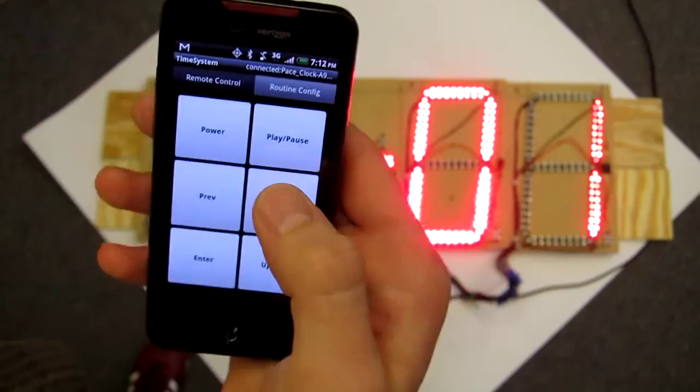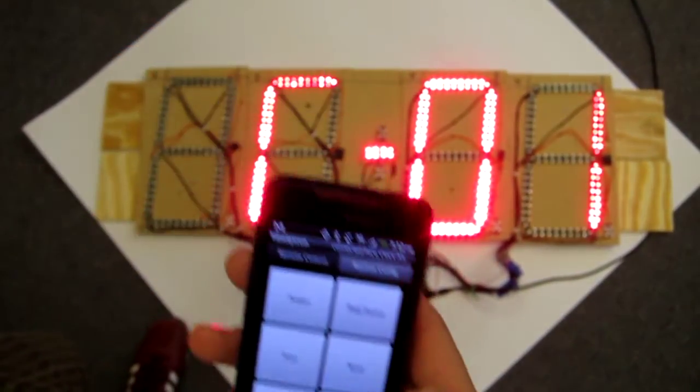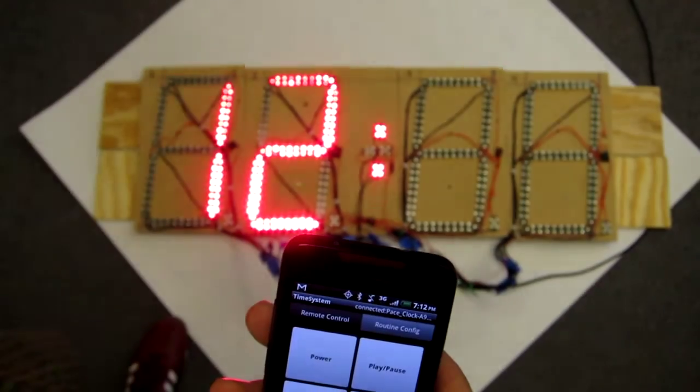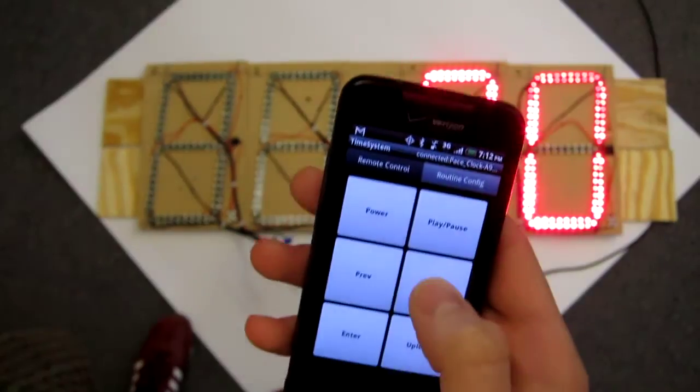So that shows the routine setting. You can select it, it prompts you for the clock. Let's say it's 12:01.